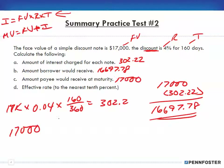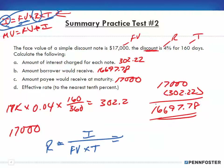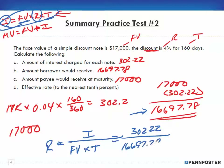Now for the effective rate — remember how we figure out the rate. We don't have to remember a new formula; we use the same formula. We set rate equal to interest in the numerator, and since we've placed interest there, all we're left with is face value times time in the denominator. We had calculated the interest at $302.22. The face value now is $16,697.78, and the time is 160 over 360.